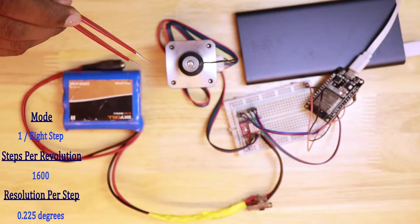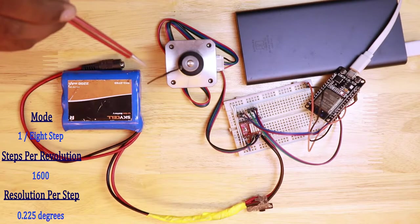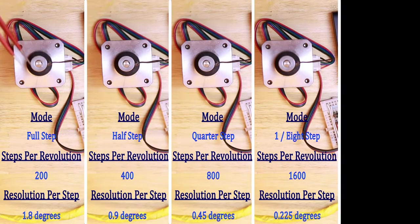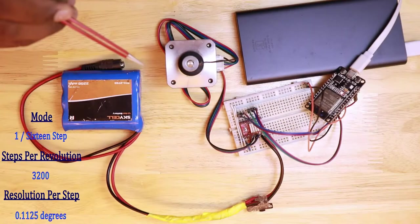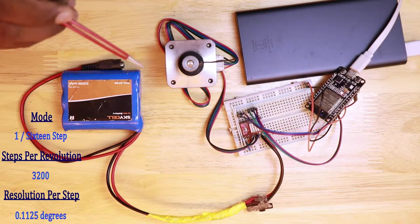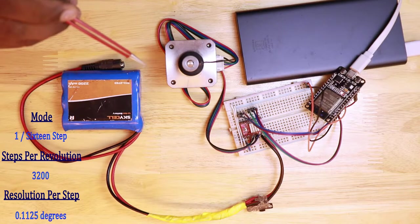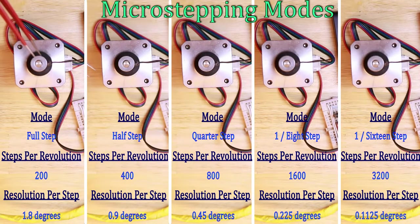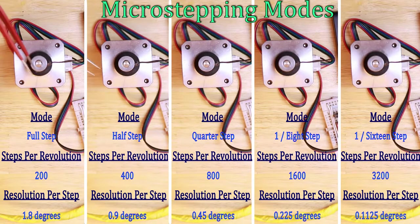In one-eighth-step, it takes about 1600 steps to cover one complete revolution, so each step has a resolution of about 0.225 degrees. In one-sixteenth step, it takes about 3200 steps to cover one complete revolution, so each step has a resolution of about 0.1125 degrees. So with these resolutions, we could make super slow motion shots. Awesome.